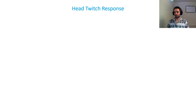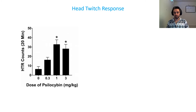The first bioassay the authors use is the head twitch response. The idea is that you give a psychedelic drug to a mouse or rat and it will twitch its head, and this amount of head twitching is correlated to drug binding to the serotonin 2A receptor — basically used to evaluate how strong a psychedelic the drug is at the receptor. Psilocin is used as a control, and as we go from 0 to 0.3 milligrams per kilogram we see an increase in head twitch counts in 20 minutes. At 1 mg/kg and 3 mg/kg we see statistically significant effects, denoted by the star on top.